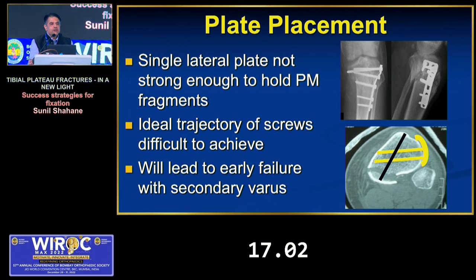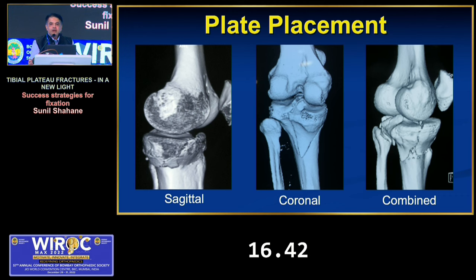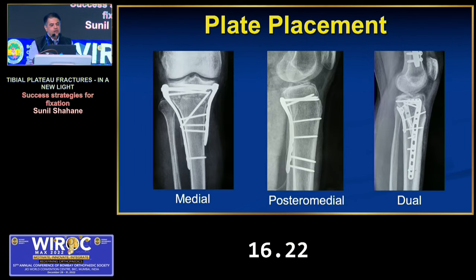For elevating a depressed fragment with rafting screws or a metaphyseal-diaphyseal combination needing bridging, angular stable locking plates are a better option. Placing the plate in the right position is equally important — there is sometimes a temptation to fix everything with a single lateral plate, but if there is a coronal posteromedial fragment, the trajectory of screws from a lateral plate will not reach it, and a separate medial plate is needed. You must assess whether to place the plate medially or posteriorly depending on where the fracture apex exits.